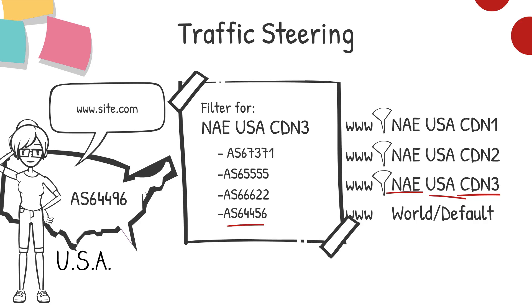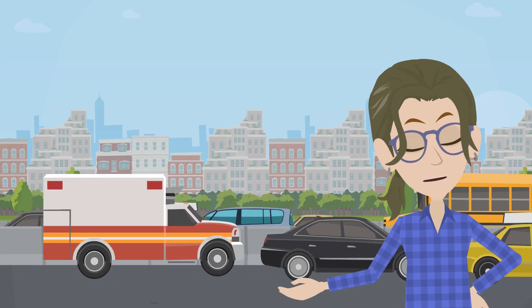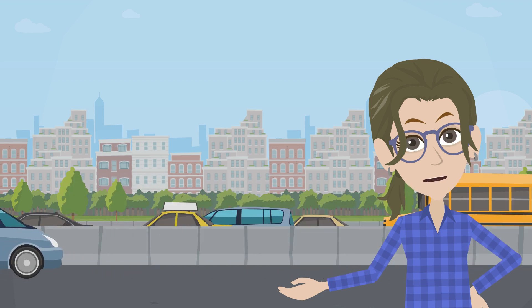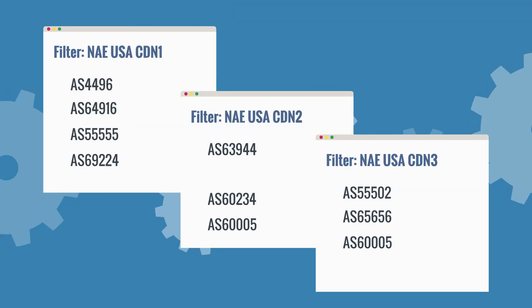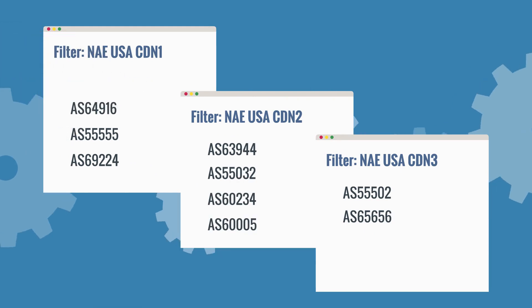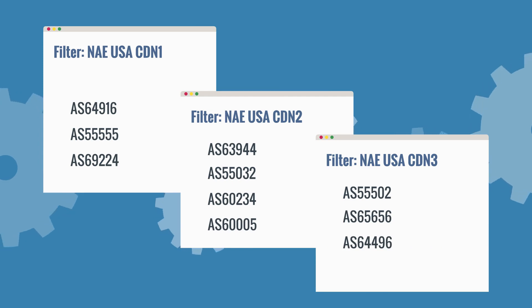But just a minute ago, our ASN was supposedly faster with CDN1 — what happened? Well, the internet is volatile and traffic conditions can change in the blink of an eye. So what might have been fast a few hours ago may not hold true now. Kostelix stays on top of these traffic fluctuations by constantly updating the filters as CDN performance changes for every ASN. In this case, Kostelix will remove AS64496 from the North America East USA filter for CDN1 and add it to the North America East USA CDN3 filter, where it is currently the fastest.